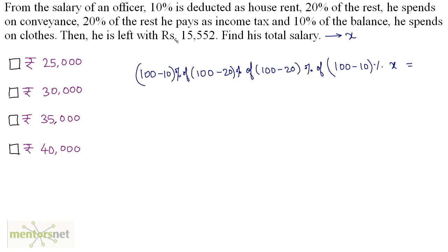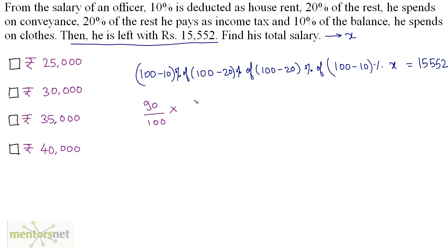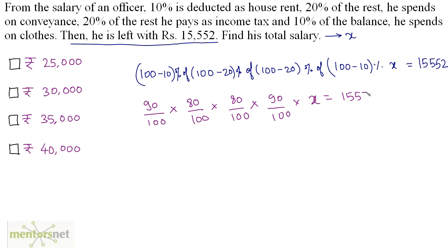This final amount is equal to Rs 15,552. We can evaluate this: 90/100 times 80/100 times 80/100 times 90/100 times X is equal to 15,552.